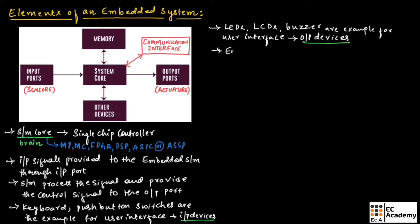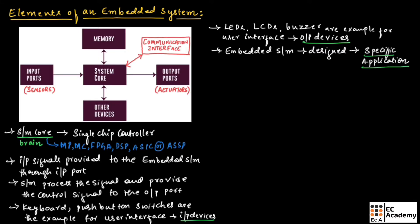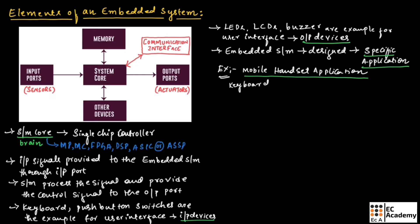Embedded systems are designed for specific applications, for example an embedded system designed for handheld applications such as a mobile handset. In mobile handset applications, the keyboard is the user interface for input operations and the display is the user interface for output operations.